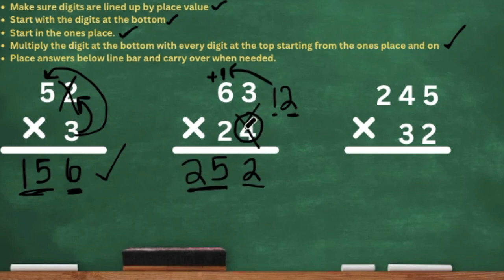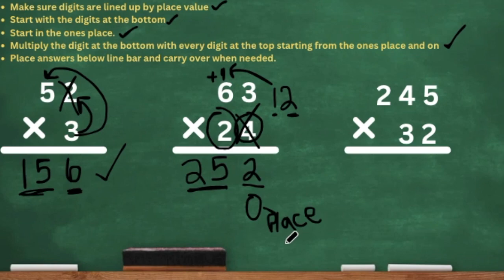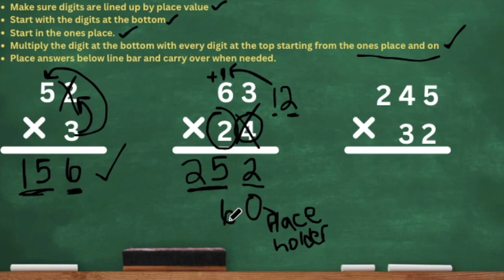Now we are done with the 4 — we're going to cross it out. So now we have to move to the next digit at the bottom, which is the 2 in the tens place. We're going to do exactly what we did with the 4 — multiply by every digit at the top. Being that the 2 is in the tens place, we have to start our answer in the tens place in this second row. That's why we have to put a placeholder in the ones place. So we have 2 times 3, which is 6, and we put the 6 down there. Next, 2 times 6 is 12, so we put the 12 there.